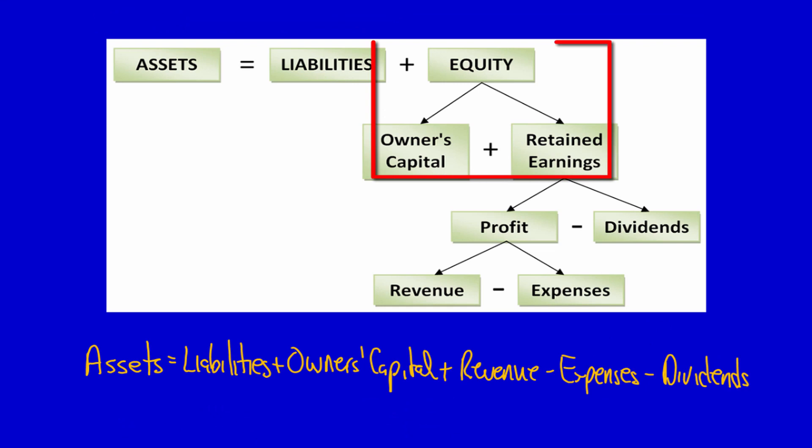Recall that equity is made up of owners capital and retained earnings. So if we have opening balances at the beginning of the year, there must be owners capital and retained earnings, and those two things added together equal equity. So we can split equity apart. Let's do it.